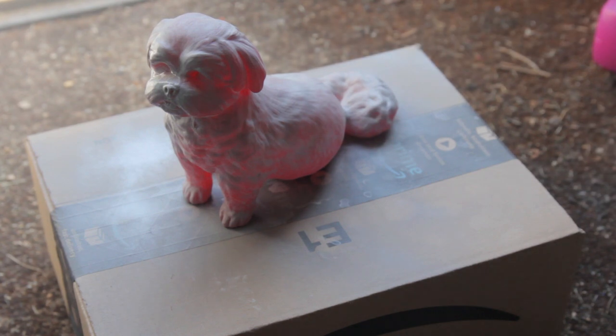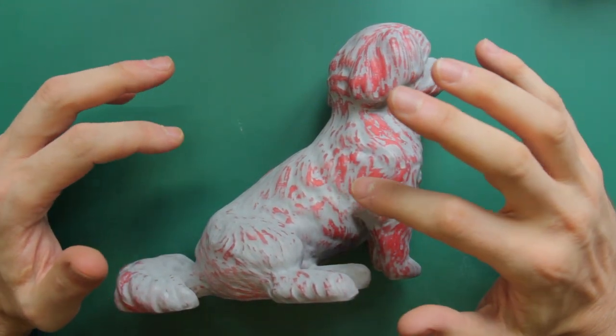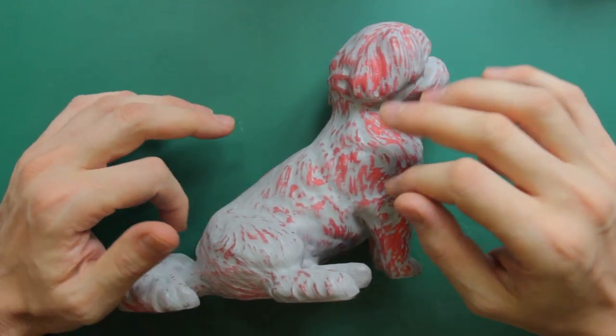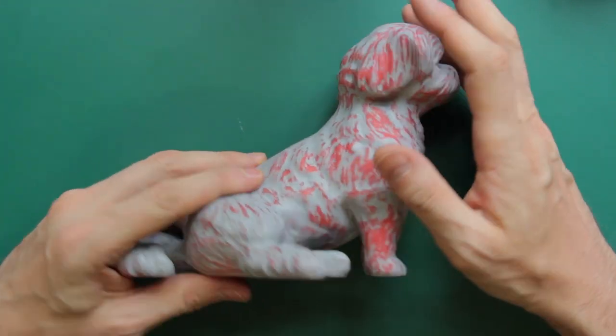So basically I sprayed it gray, came back to it, and saw that there were still some subtle lines and patches from where the acetone had dissolved too quickly. I kind of just gave it a sand, sprayed over, and this is where it is now.